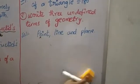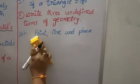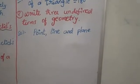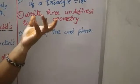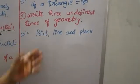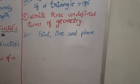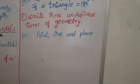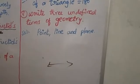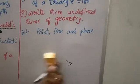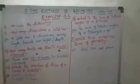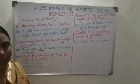Next: write three undefined terms of geometry. We have discussed this in previous videos. The three undefined terms are: point — we can't define a point; line — a line is also undefined; and plane. These are the three undefined terms of geometry.